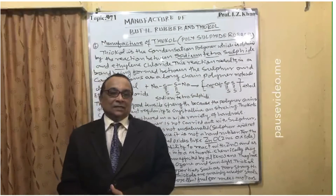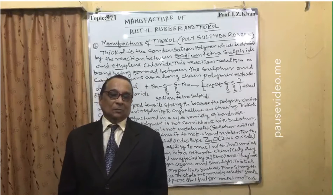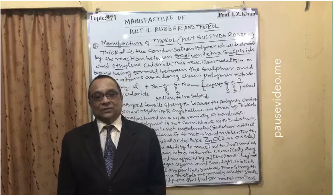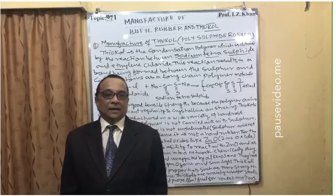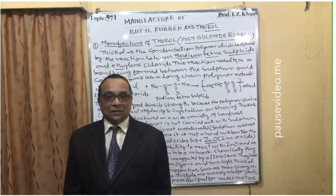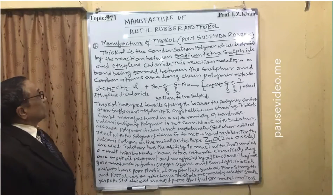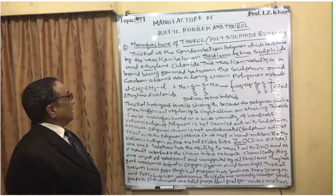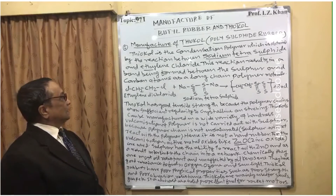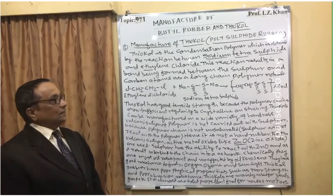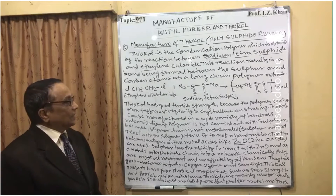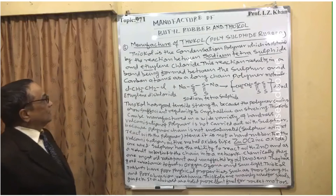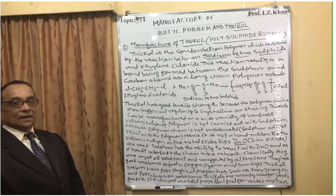Next is the manufacture of Thiokol rubber. Thiokol rubber is manufactured by reacting dichloroethylene with sodium tetrasulfide, which gives polysulfide rubber, also known as poly sulfide rubber. Thiokol is a condensation polymer obtained by the reaction between sodium tetrasulfide and ethylene dichloride. This reaction results in a bond being formed between the sulfur and carbon atoms, forming long polymer chains.